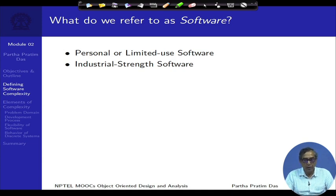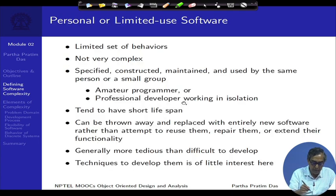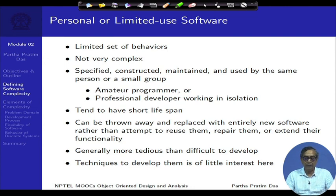For the purpose of this course, we divide the software of the world into two buckets. One we call personal or limited use software, and the other we call industrial strength software. The personal or limited use software has a limited set of behavior. It is not very complex, and most importantly, it is specified, constructed, maintained, and used possibly by the same person or at most by a very small group.